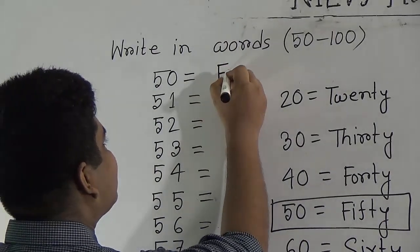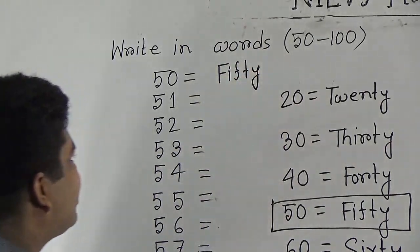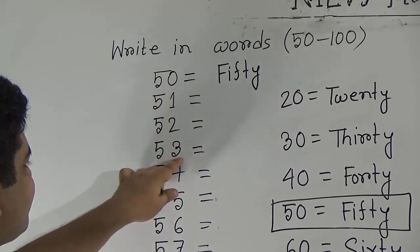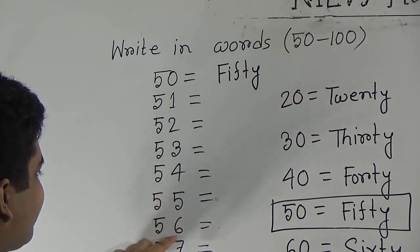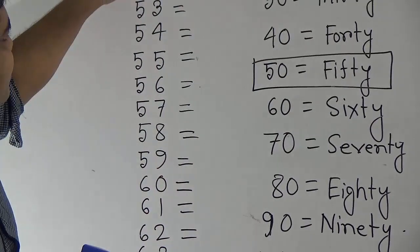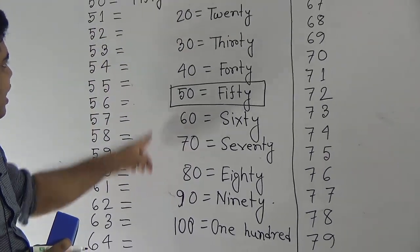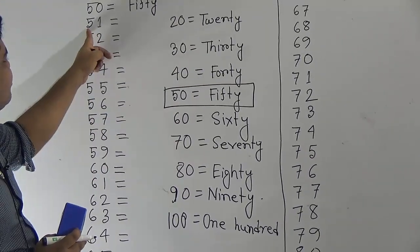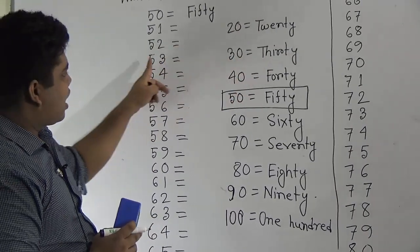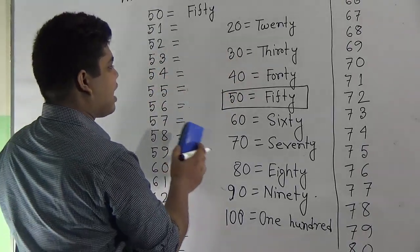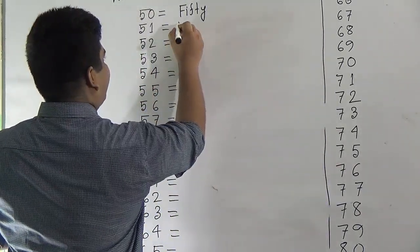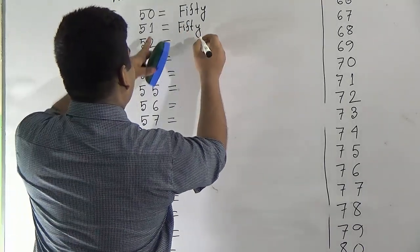So write 50. My dear students, note that 50 means 5-0. Next is 51, 52, 53, 54, 55, 56, 57, 58, and 59. From this number to this number, we write fifty again and again. For 51, at first we write fifty, then we write one. For 52, at first we write fifty, then we write two. So we write and erase this portion. Fifty — F-I-F-T-Y — this is 50.